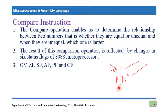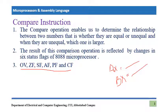The result of the comparison operation is reflected by changes in six status flags. Those flags are: overflow flag, zero flag, sign flag, auxiliary flag, parity flag, and carry flag. These six flags are responsible for determining which value is actually the larger one.